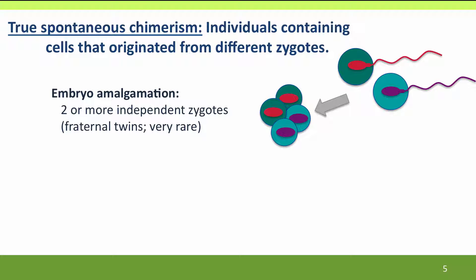True spontaneous chimeras can happen mainly as an accident of fertilization or very early events in pregnancy. One way is by the fusion of two independently arising embryos, called embryo amalgamation. This occurs when two independent zygotes are formed — different eggs fertilized by different sperm — and those two zygotes fuse, either at the single cell stage or very early in embryonic development. Thus, what would have been fraternal twins grow into a single person with a mixture of two sets of genes, both derived from the same parents.